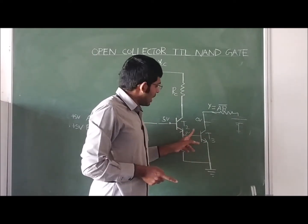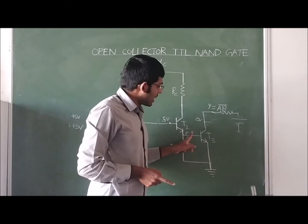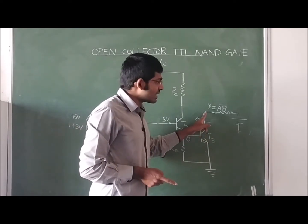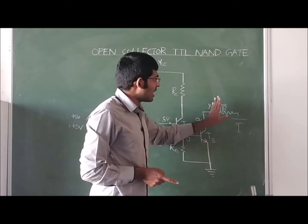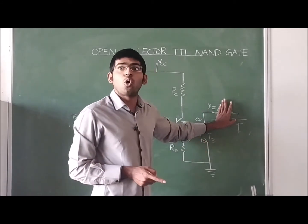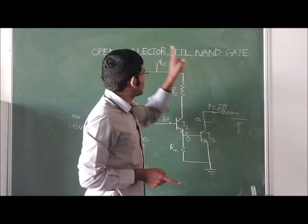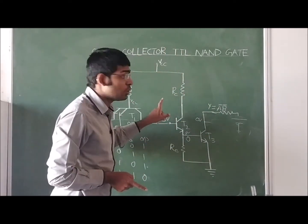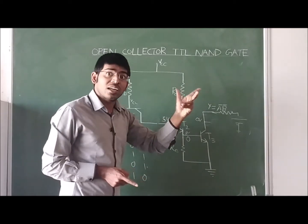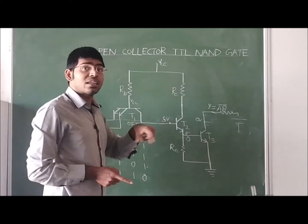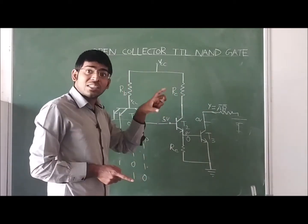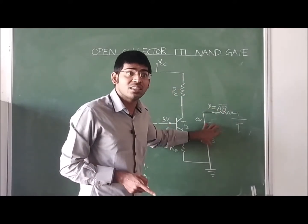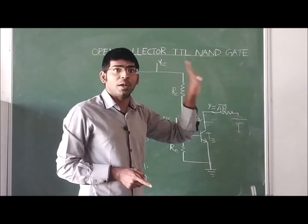The emitter output of T2 is connected to transistor T3. T3's collector terminal is left open — that is why this circuit is called an Open Collector TTL NAND gate. T1's collector is not open, but the final transistor T3's collector is open.